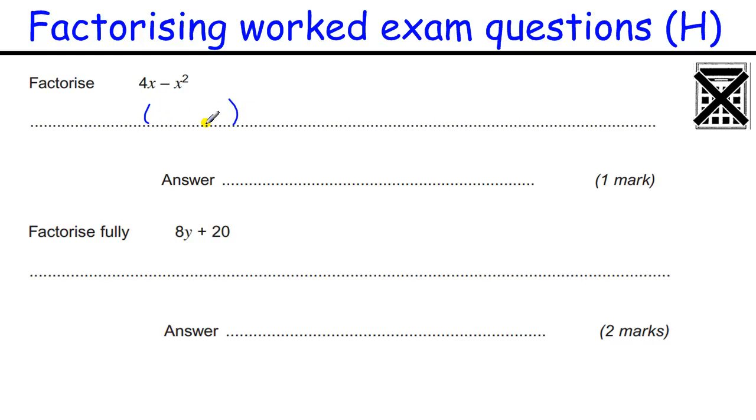Now with these easy one mark questions, we're just looking for a single bracket. So we can rewrite this question with a bracket, put this symbol here and then try and figure out what goes into both parts of the expression. First of all we look at the numbers, there is no number that goes into 4 and this should be 1, but we don't write the 1 there. Apart from 1 which is no use as a factor. And then looking at the x and x squared, we should be able to see that x goes into both of those.